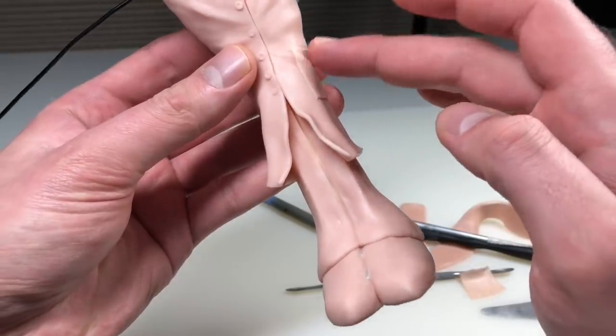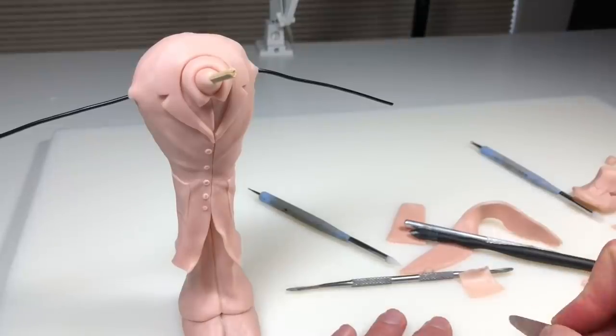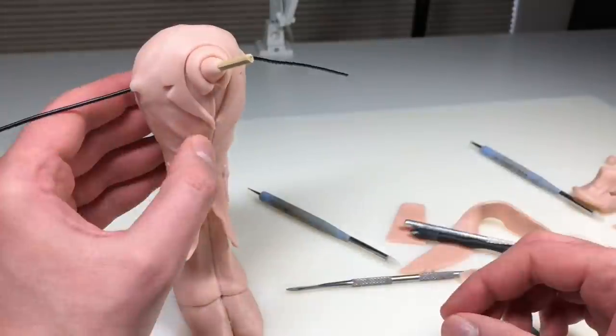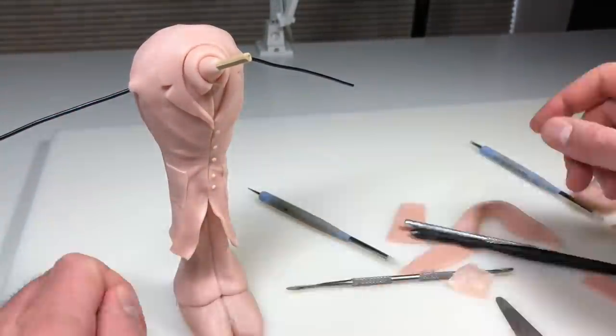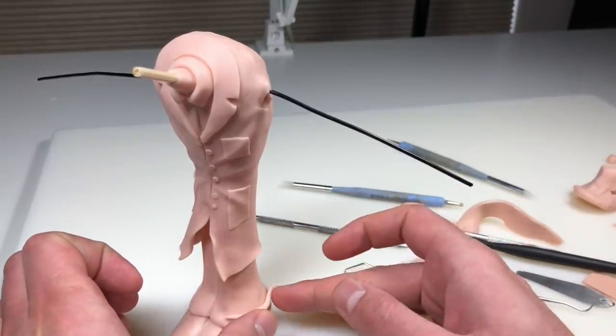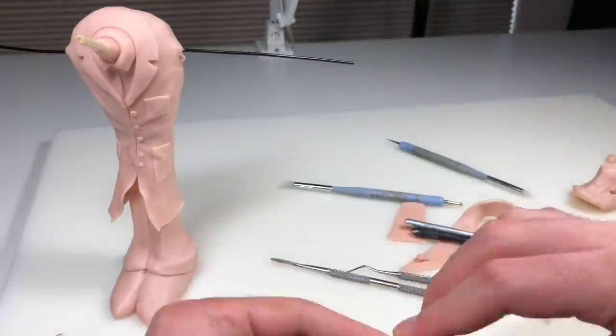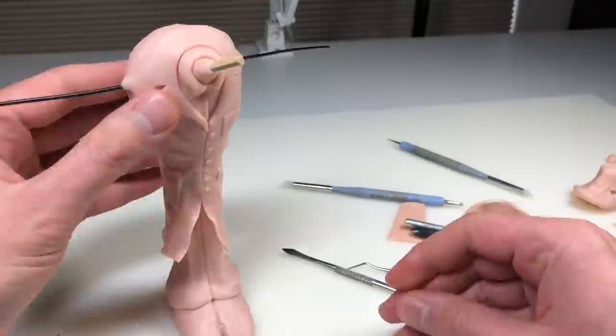Now we're going to add some pockets. These are just very thin pieces of clay that I rolled through my pasta maker on the sixth setting, and I'm just pressing those into place. Now we're moving the buttons over because I knew they were on the wrong side. Adding another pocket, and then we're going to add some wrinkles to his pants just to heighten the detail on them so they're not so flat and geometric looking.